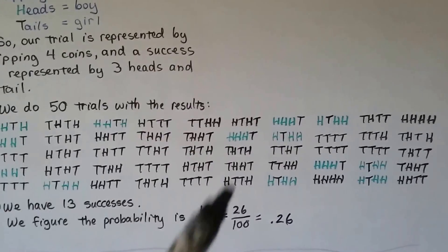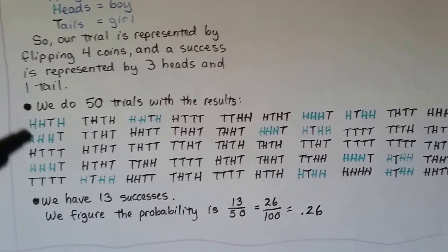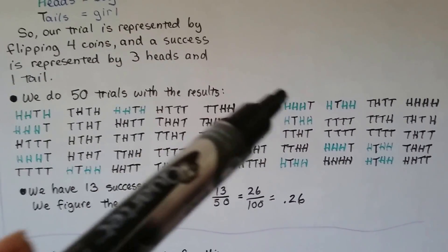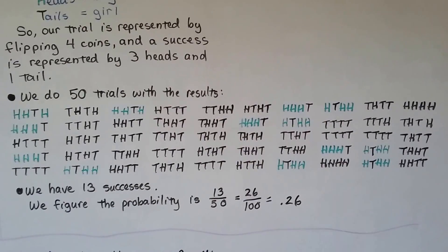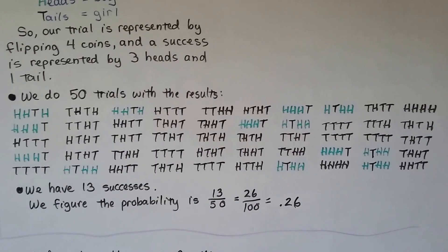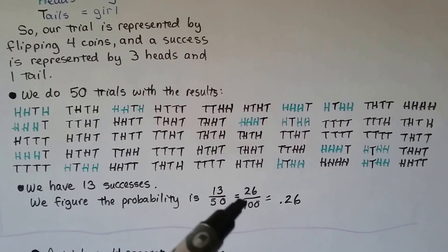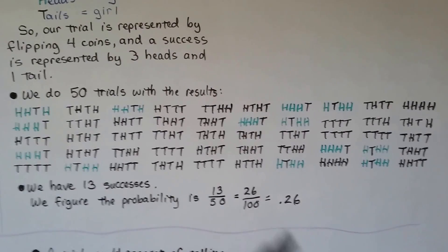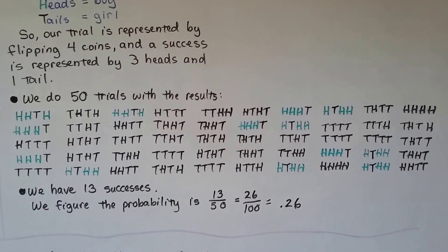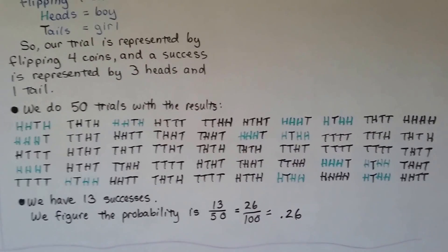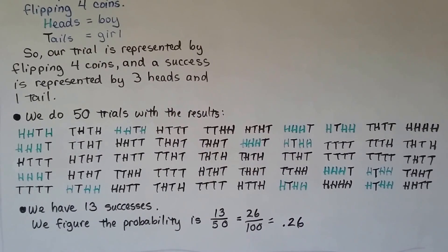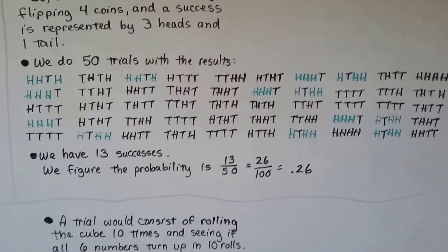Each one with the green is a success. So we end up with 1, 2, 3, 4, 5, 6, 7, 8, 9, 10, 11, 12, 13 successes. So we figured the probability is 13 fiftieths, which is 26 one hundredths, which is .26. So that would be the probability of the family having three boys and a girl. A little more than one fourth of the time.